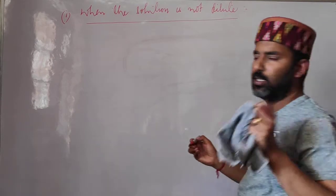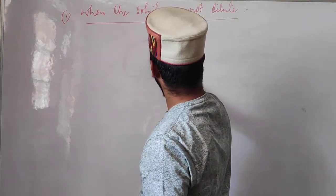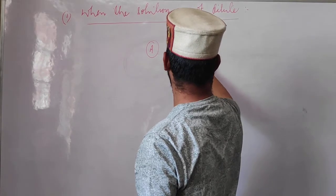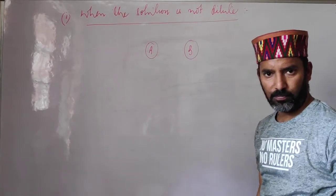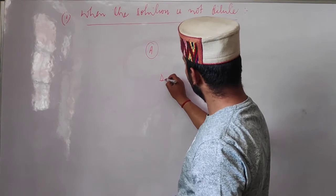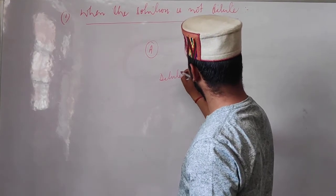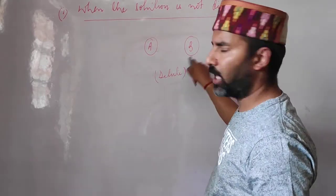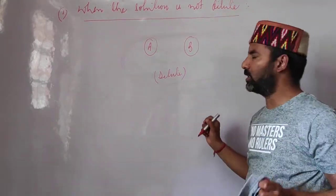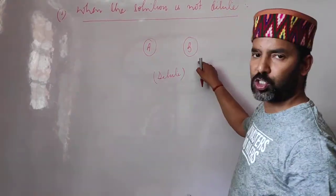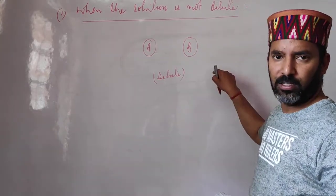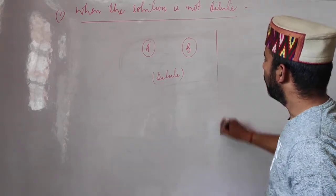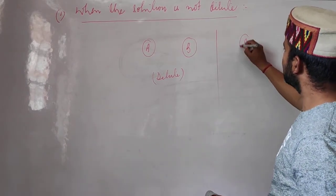Suppose we have a solution in which solute particles are A and B. When the solution is dilute, these particles are far apart and their interactions with each other are negligible.